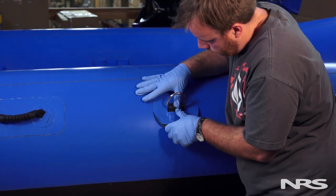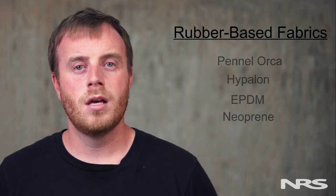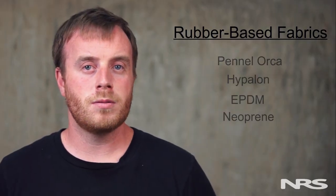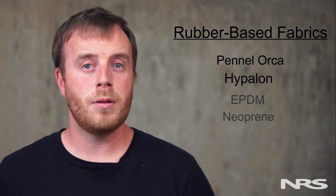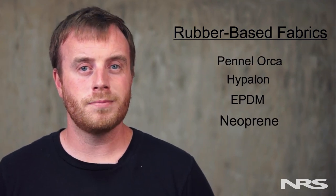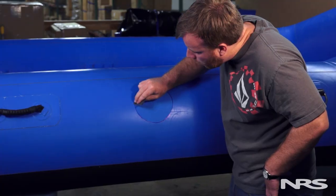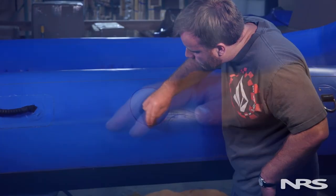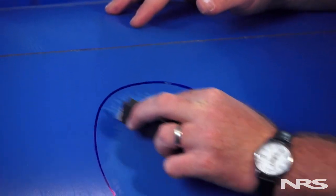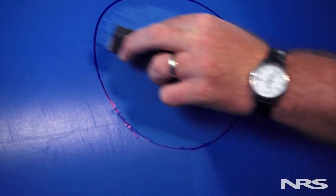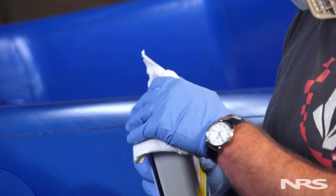It's important to pick the right glue for your repair job. Each glue has a specific chemical composition that adheres best to the material it was designed for. We'll start off with rubber-based fabrics, otherwise known as Hypalon, EPDM, or neoprene. When working with rubber-based fabrics, mechanical preparation or sanding is very important as it provides a rough surface for the glue to hold onto. Chemical prep should be done with toluene or acetone, but in a pinch you can use rubbing alcohol.